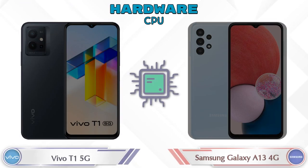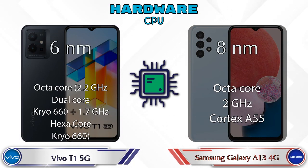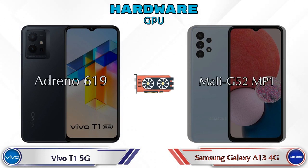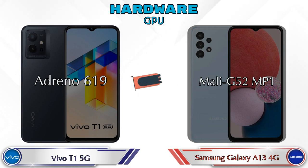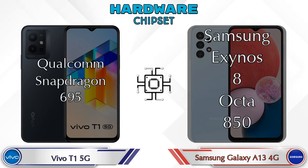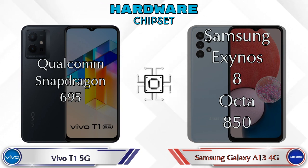First, let's talk about the most important part of the phone — hardware. For the GPU, the Adreno 619 is available in the T1 5G, and Mali-G52 MC2 is available in the Galaxy A13 4G. For the chipset, Qualcomm Snapdragon 695 is in the T1 5G, and Samsung Exynos 8 Octa 850 is in the Galaxy A13 4G.